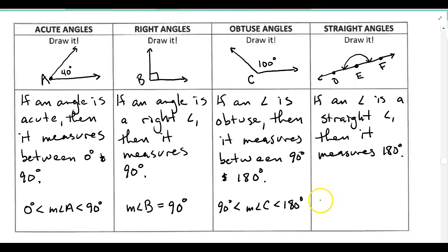And we could say that the measure of angle D, E, F equals 180 degrees. Notice I used three letters to name this angle. And I put the vertex, the middle point, in the middle when I named it.